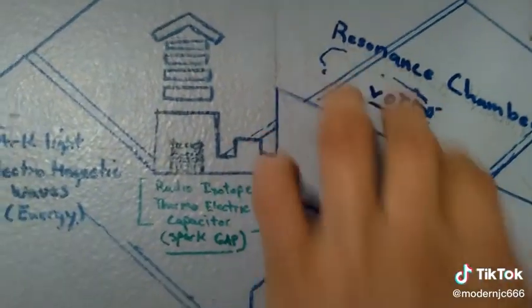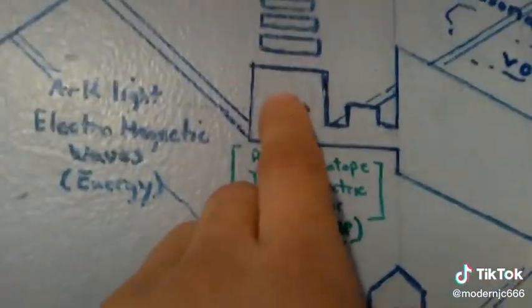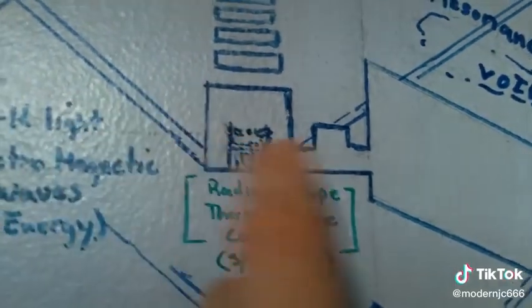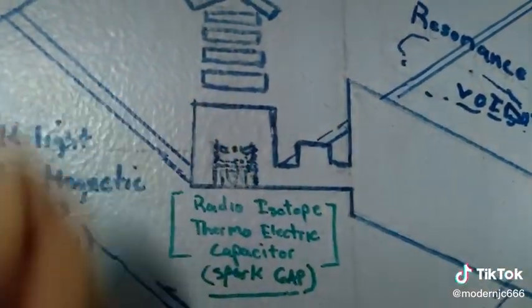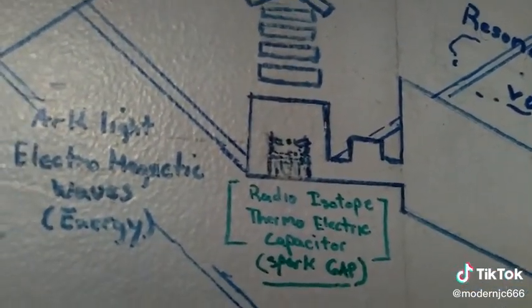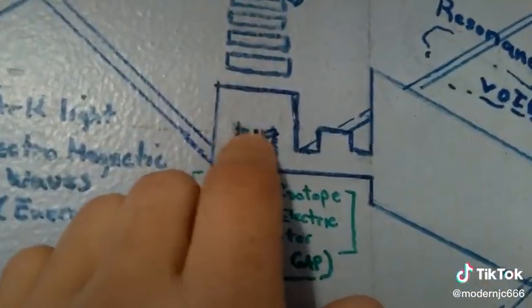This is a resonance chamber, the void. The Ark of the Covenant was a hot circuit until it was grounded into the sarcophagus, and that completed the circuit. This is why you couldn't touch it, because it was a live circuit with a nuclear arc of plasma right here.